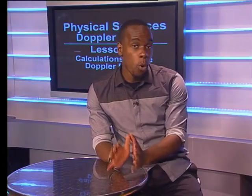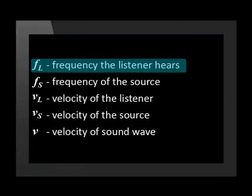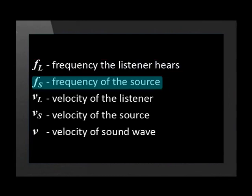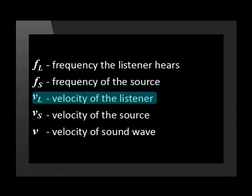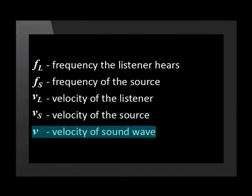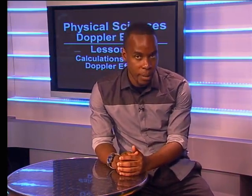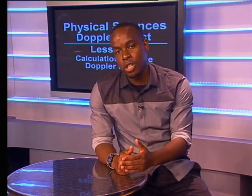It's really important that you know what each symbol stands for. Let's recap: F subscript L is the frequency the listener hears; F subscript S is the frequency of the source of the sound wave; VL represents the velocity of the listener; VS represents the velocity of the source; and V stands for the velocity of the sound wave. Now that we know what each symbol in the equation represents, let us use the equation to solve problems.